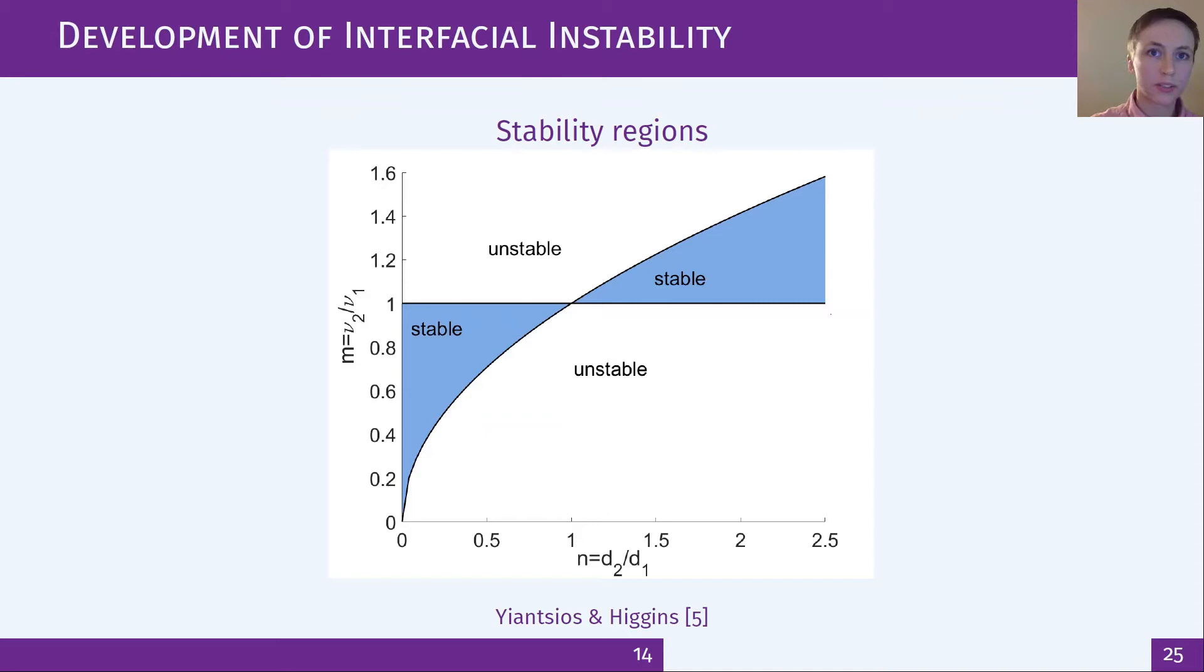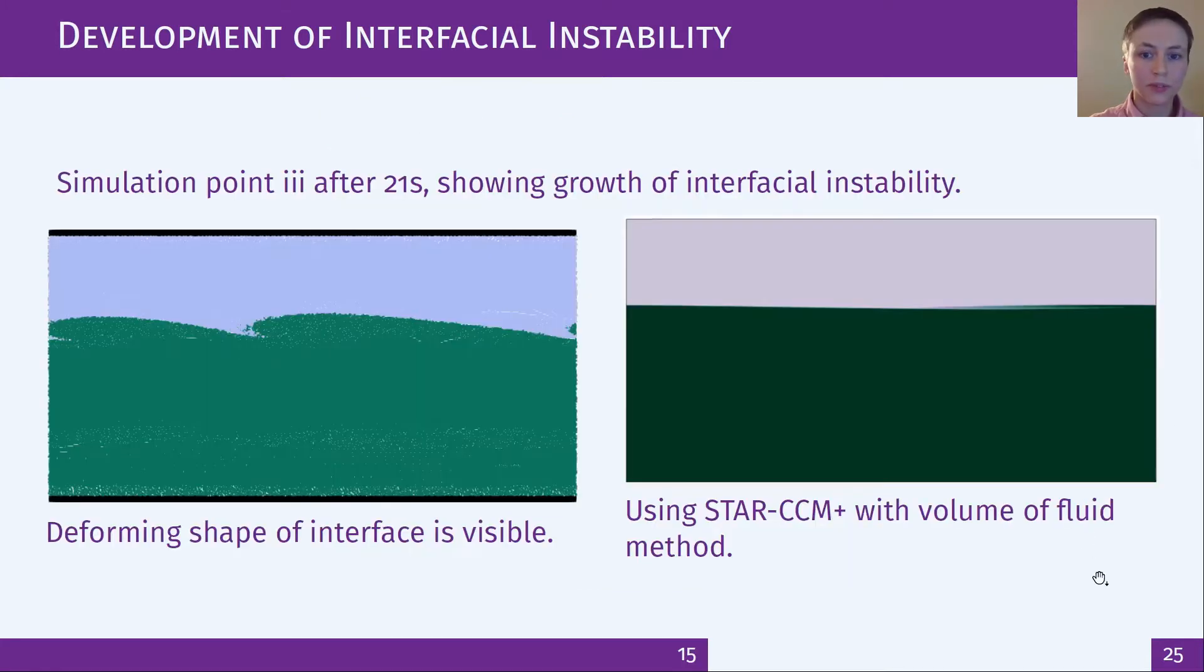These stability regions have been analytically derived using the perturbation analysis and they depend on the phase viscosity ratio and the phase width ratio. I chose simulation points in each region which agree with the literature on their stability. The figures here show the development of the instability. On the left the SPH figure where it's clear to see the deformation of the interface and the instability growing as time goes on and the shape of the interface as it develops. On the right there's Star-CCM which uses the volume of fluid method. The instability does appear but the interface diffuses so the growth and development of the instability is unclear.